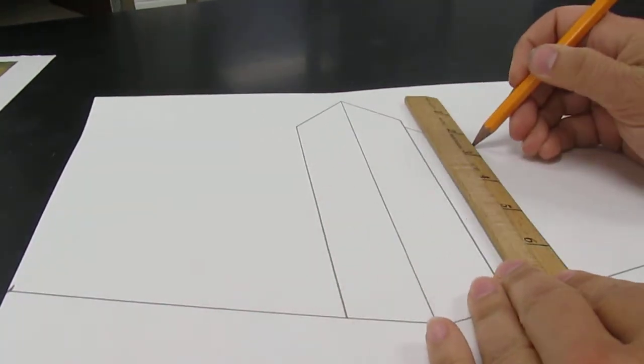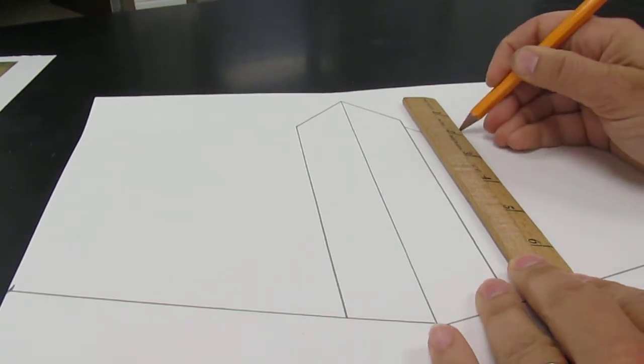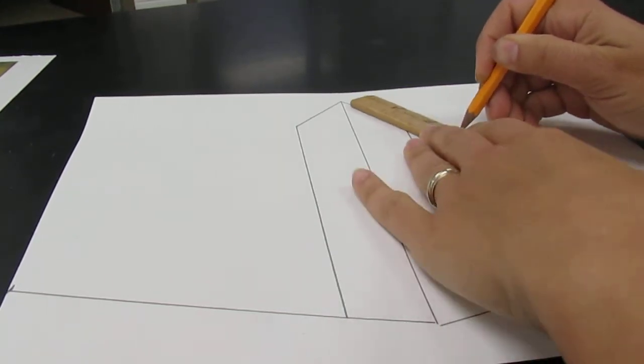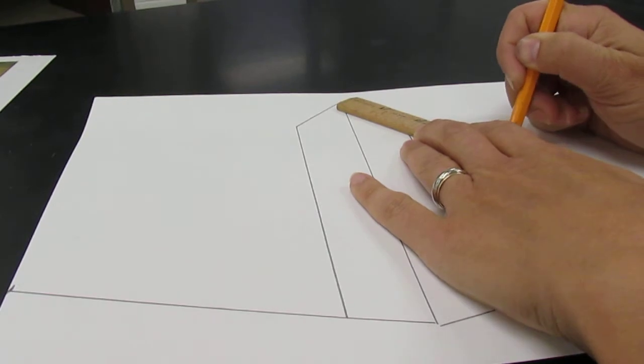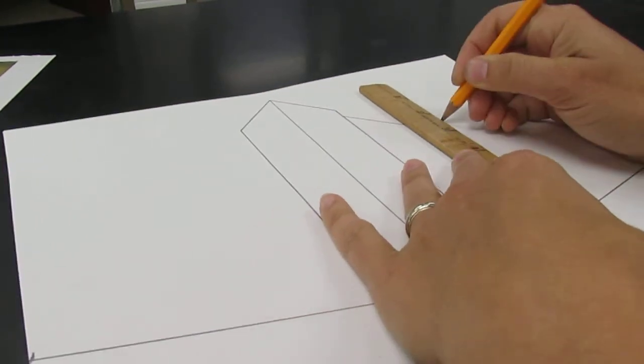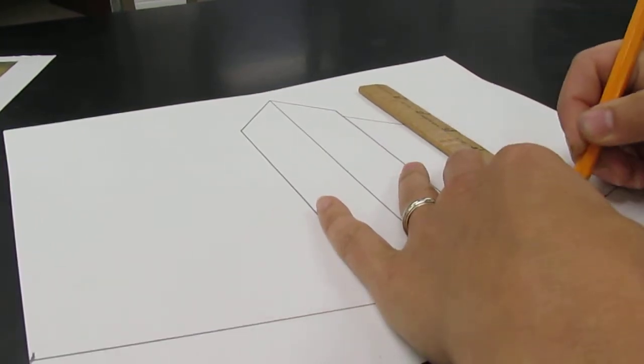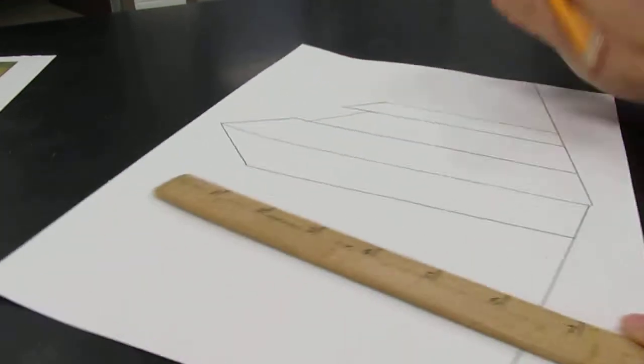If I wanted to make one that is slightly taller, I can go ahead and extend this up just a little bit, take it back to my vanishing point once again, and then once again straight down.